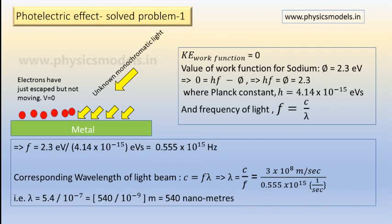So we look at this sketch. There is an unknown monochromatic light beam coming shown by yellow arrows and there are some electrons on the surface of that block called metal. The electrons are shown by red spheres, just a representation and their velocity is zero.